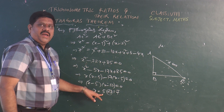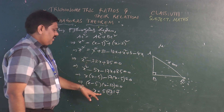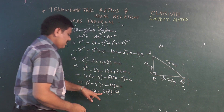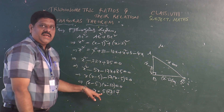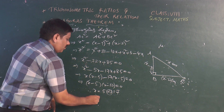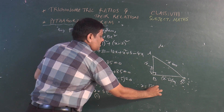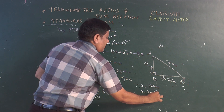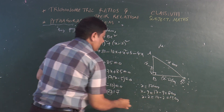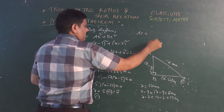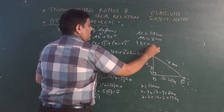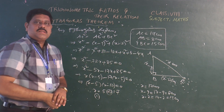X = 5 cannot be accepted because AB = X − 9 = 5 − 9 = −4, which is negative and not a valid length. Therefore X = 17 centimeters. So AC = 17 cm, AB = 17 − 9 = 8 cm, and BC = 17 − 2 = 15 cm. These are the lengths of the sides of the triangle.